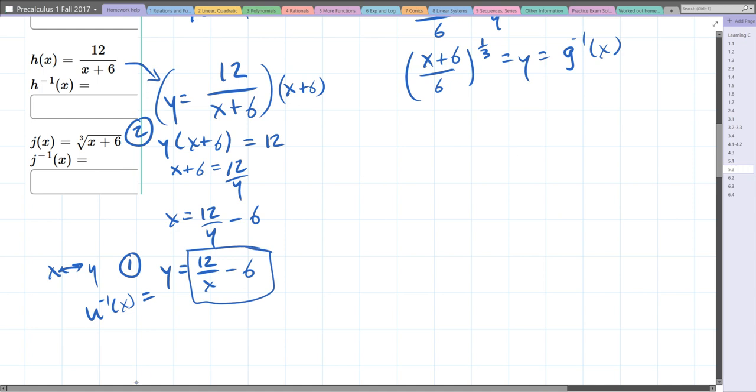Last is the j function. The cube root is a one-third power. Let's do this in the correct order. We're going to swap x and y first.